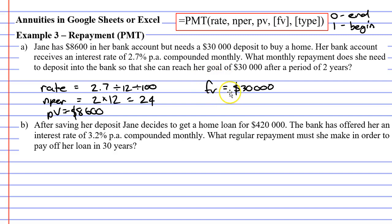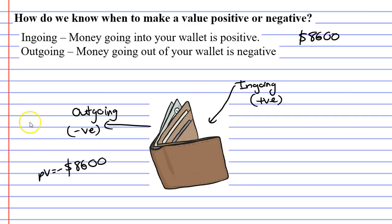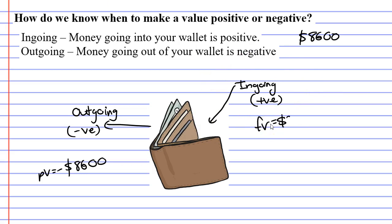Now, is the future value a positive or a negative amount? Let's look at the wallet again — is it an in-going or is it an out-going? The $30,000 isn't going into your wallet and it isn't money that's coming out of your wallet, but eventually it will go into your wallet. Because of that, our future value is going to be a positive amount.